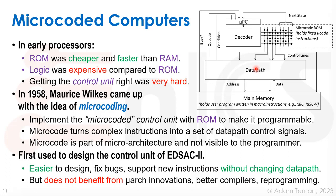Micro-coding was first used to design the control unit of the EDSAC-2. It was easier to design, easier to fix bugs, and easier to support new instructions without changing the data path. But it has basic disadvantages: it does not benefit from micro-architectural innovations. For instance, you cannot pipeline it to get instruction-level parallelism. Better compilers make it in many ways redundant, and it's pretty hard to reprogram.